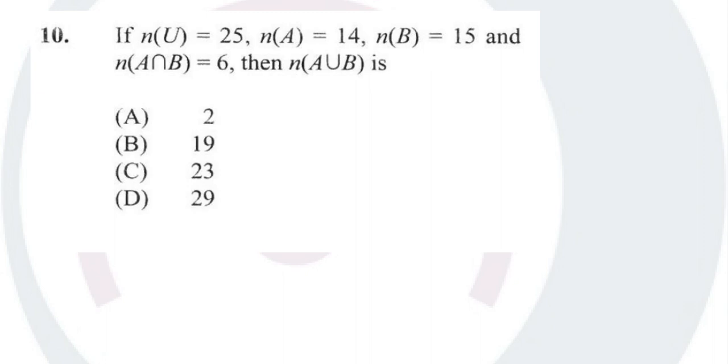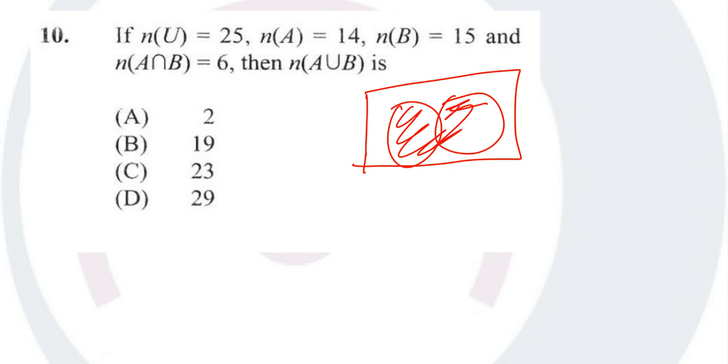So if we draw a Venn diagram, this is my box. There's A intersect B, and A union B. A union means all of the shaded area. So we know that A is 14, B is 15, the universal set is 25, and A intersect B is 6.